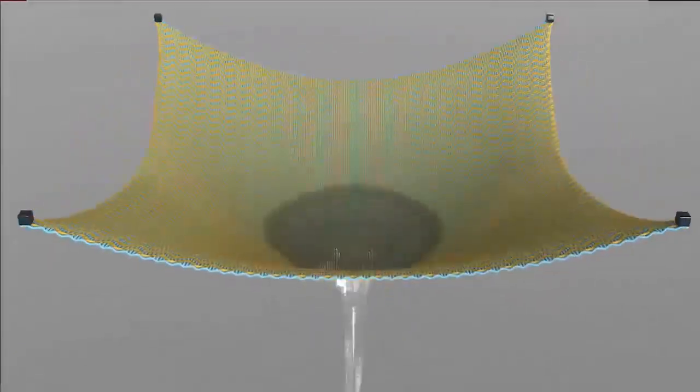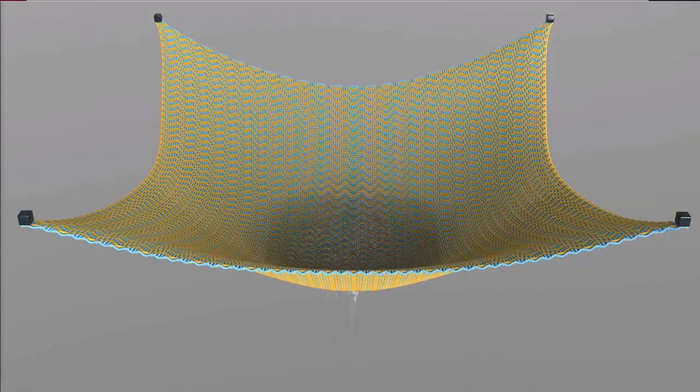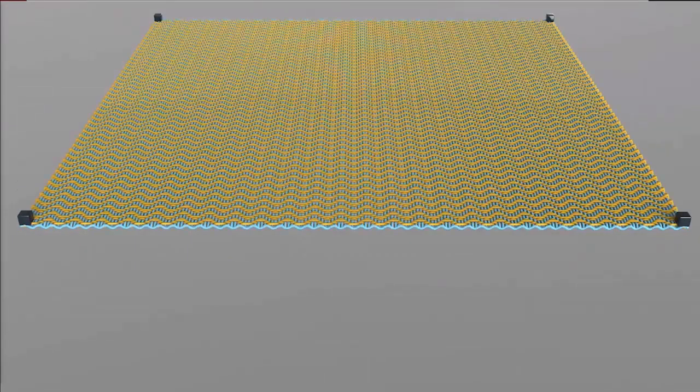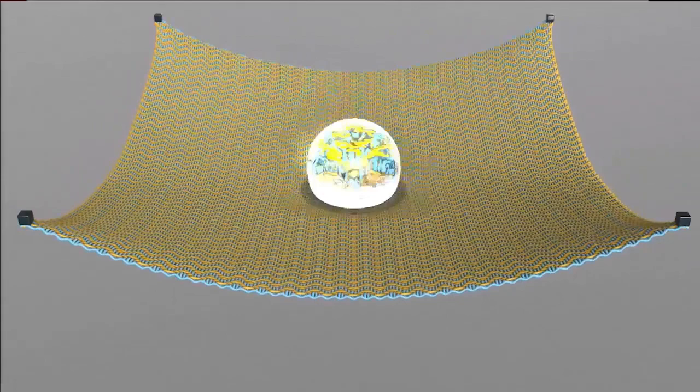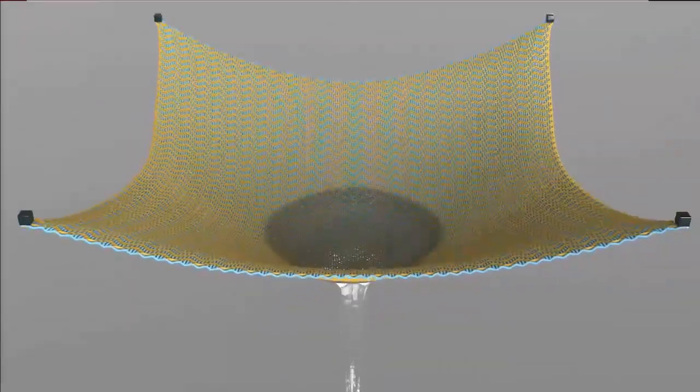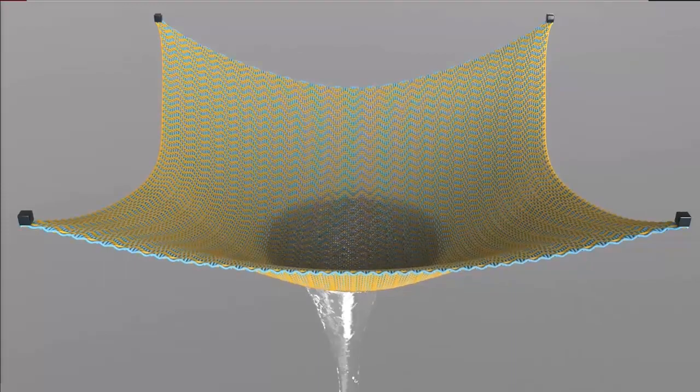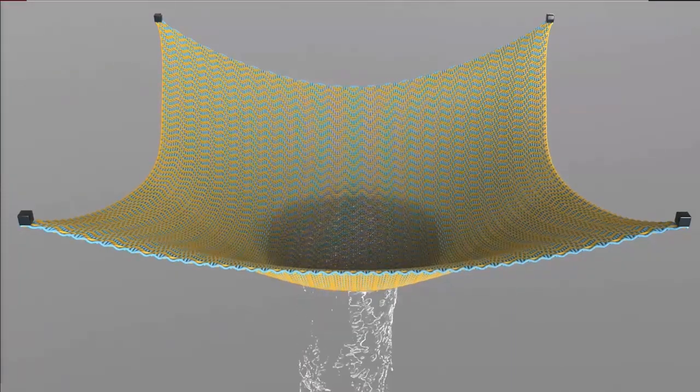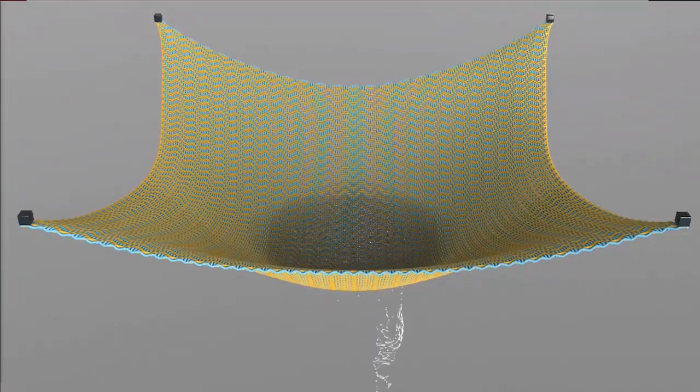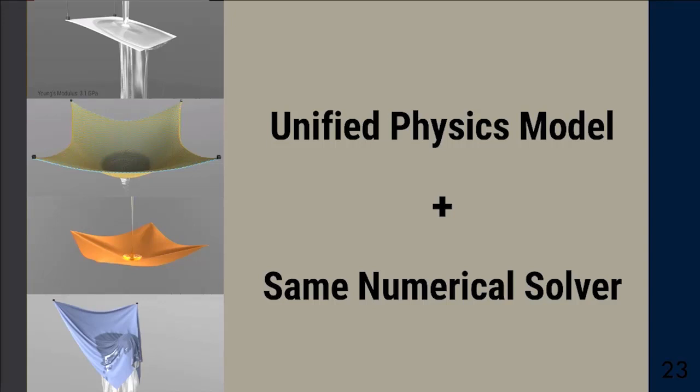More than just triangular meshes, our method can also handle geometries made by different elements. Here we show a wet hand-woven fabric made by individual yarns. Please remember that all of this above is being handled in our unified physics model and solved by the same numerical solver.